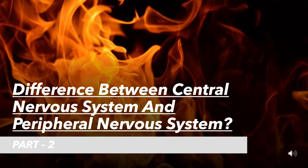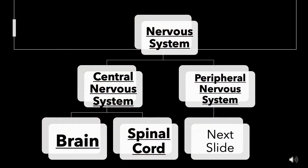Part 2 of Nervous System explains the difference between Central Nervous System and Peripheral Nervous System. There are two parts of the Nervous System: Central Nervous System and Peripheral Nervous System.